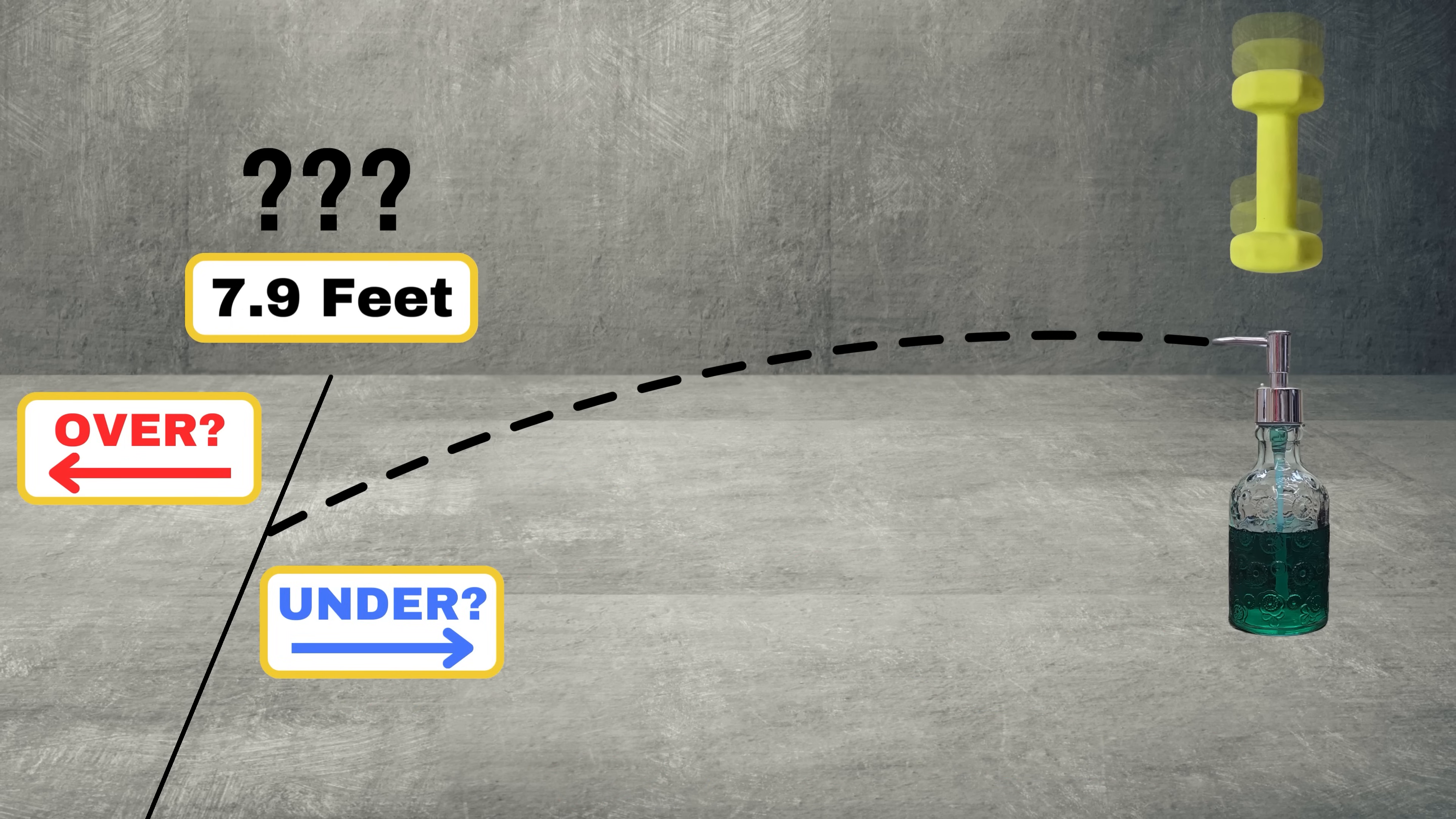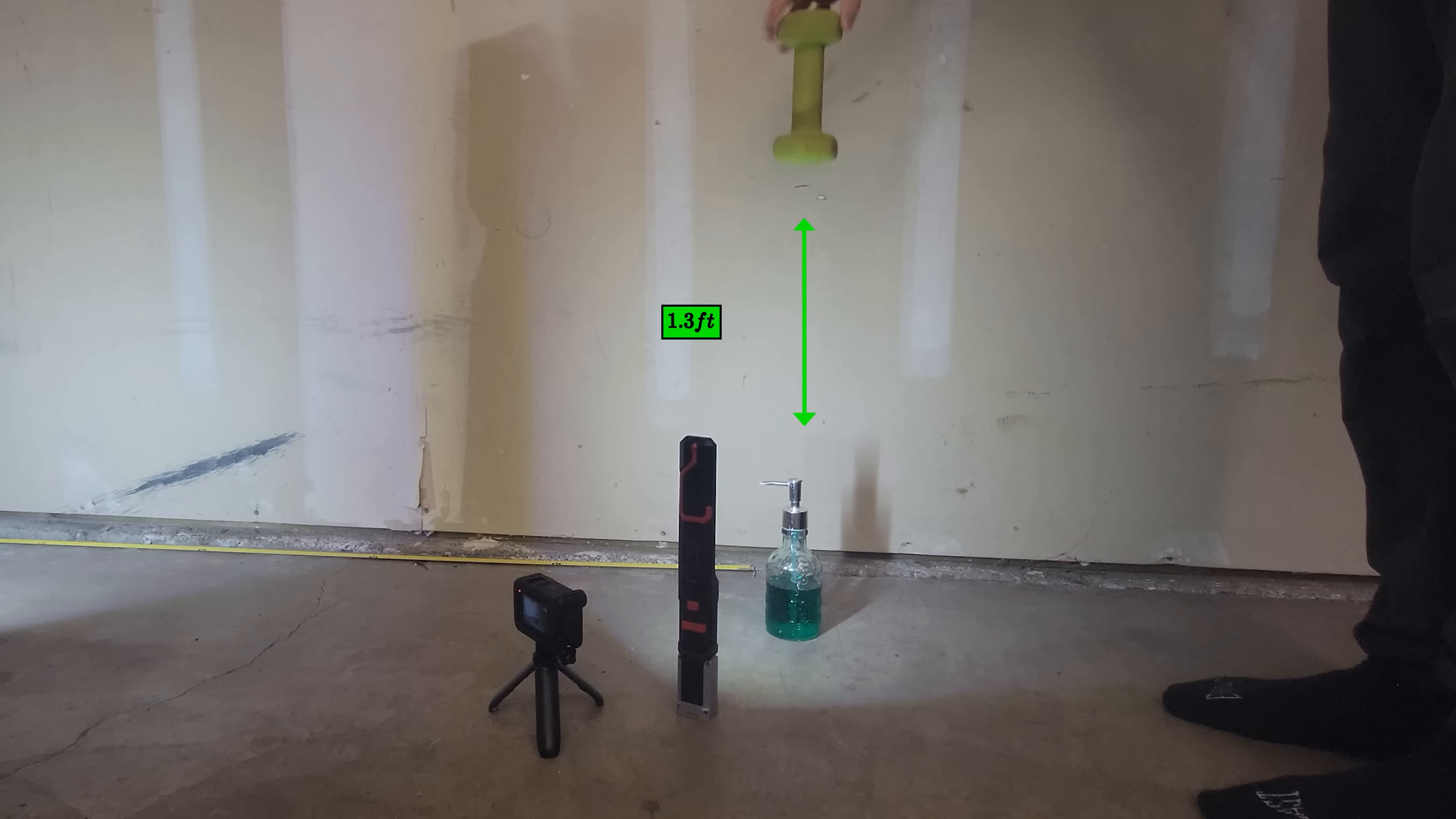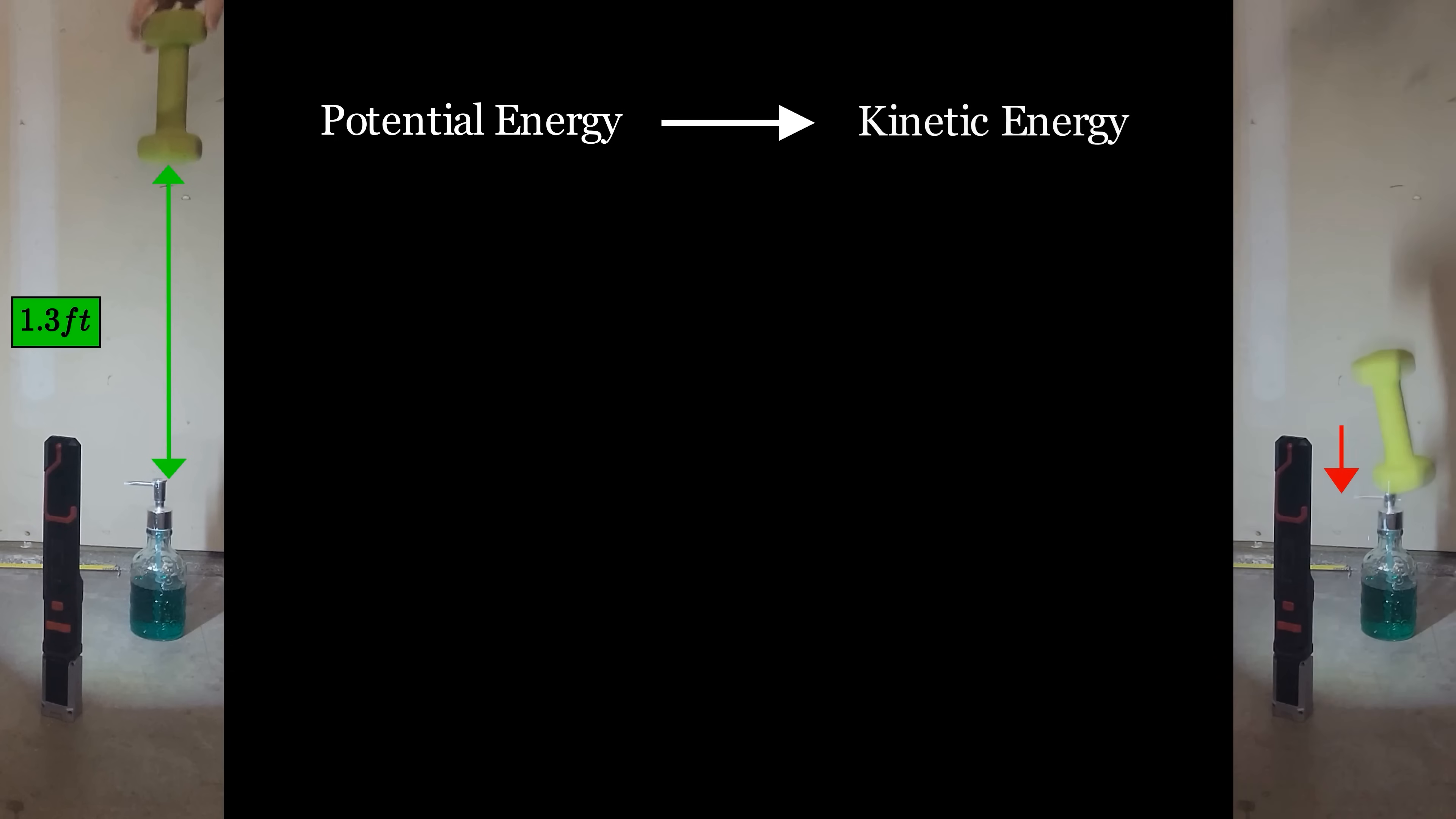How on earth was the line set? Well, using the dumbbell for scale, it was dropped from about 1.3 feet above the dispenser. That potential energy was then converted into kinetic energy to determine the velocity of the dumbbell at impact, assuming no losses. Graphing the equations for each, you see that 1.3 feet of gravitational potential energy for the dumbbell is equivalent to the dumbbell traveling at about 9.15 feet per second, meaning that will be the velocity at impact.